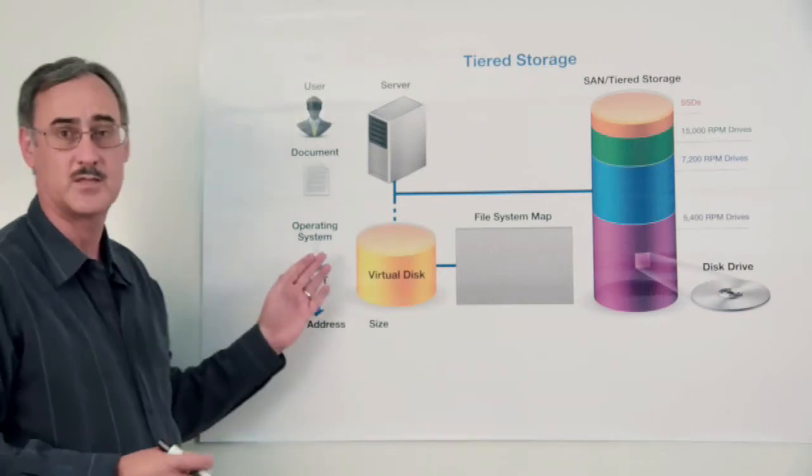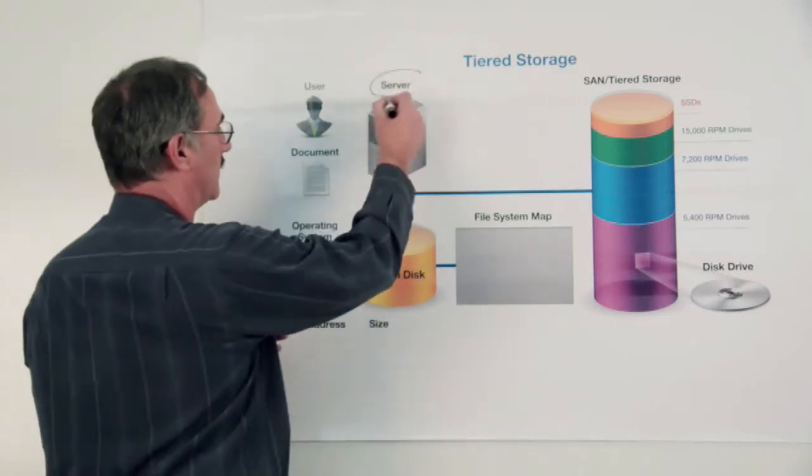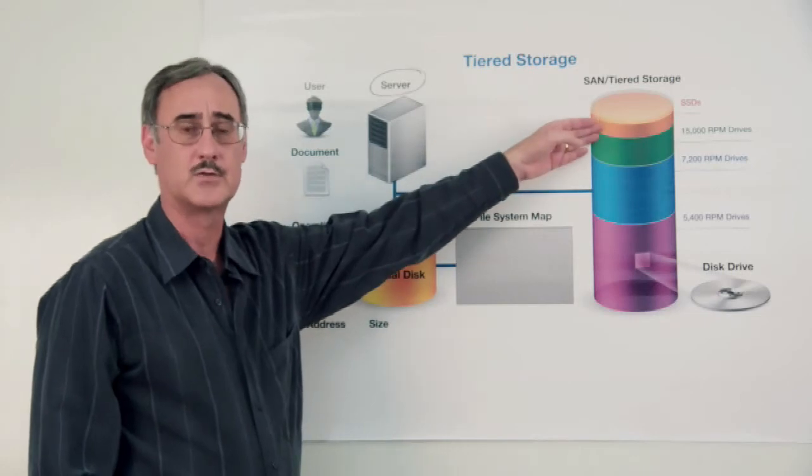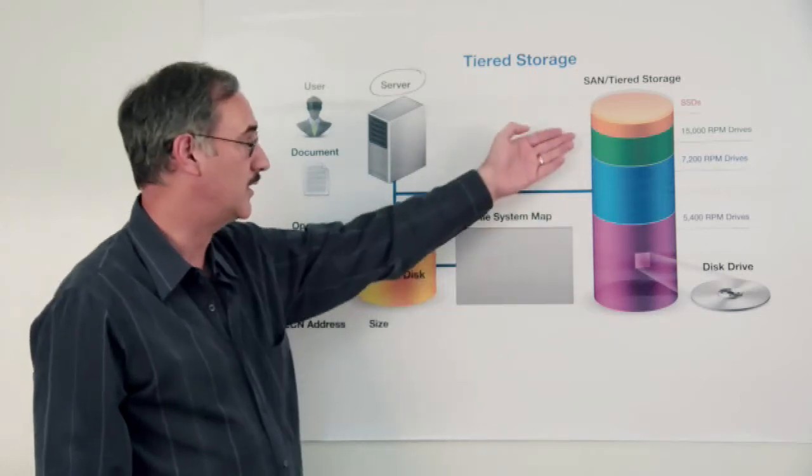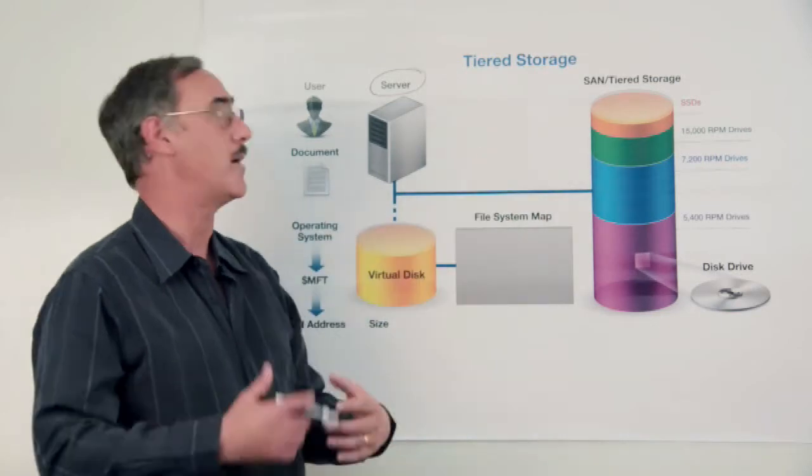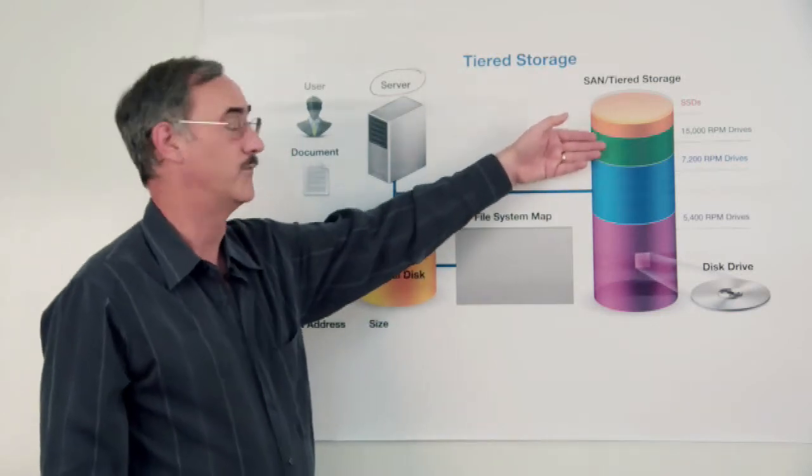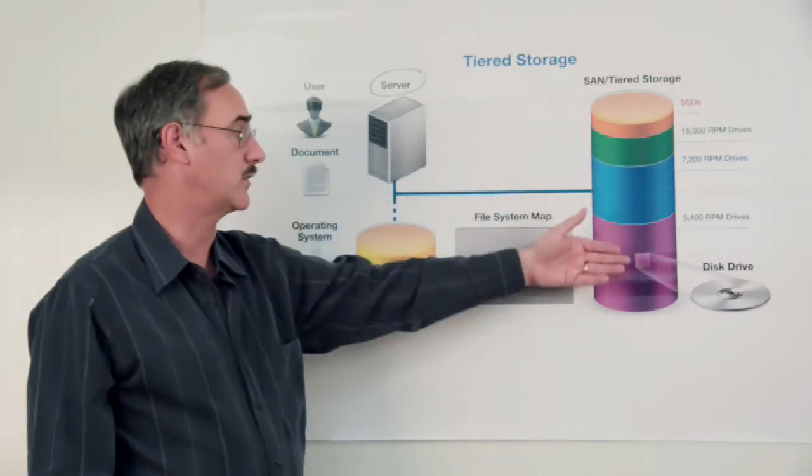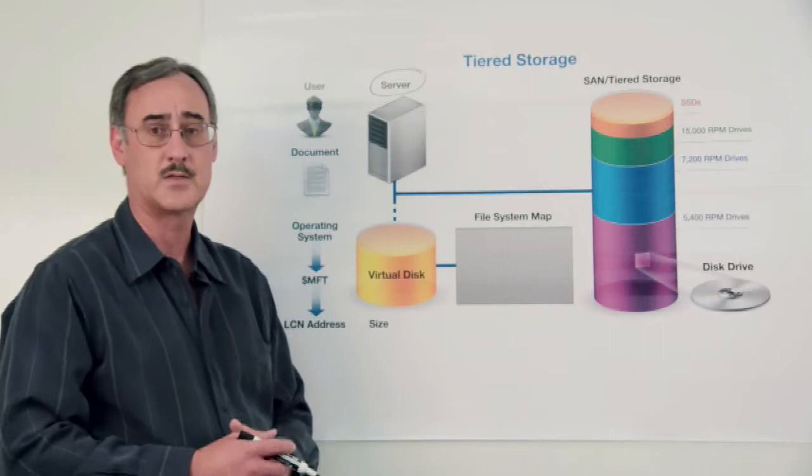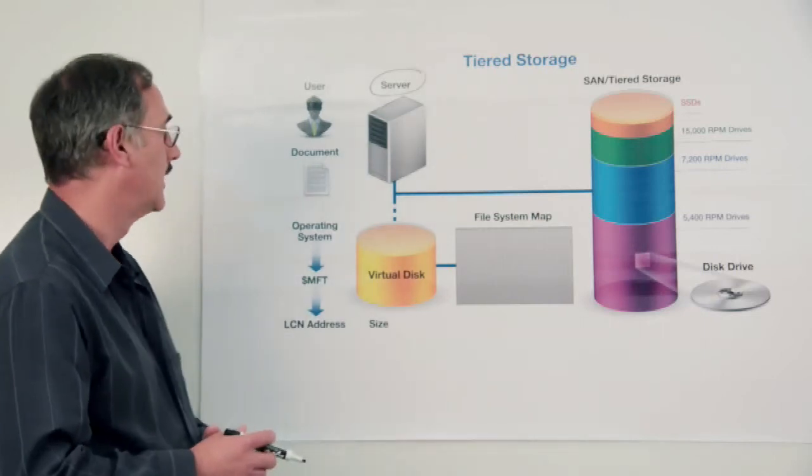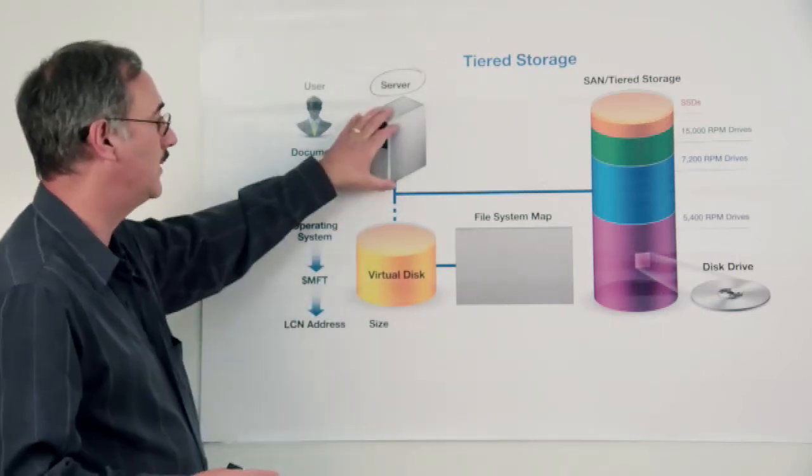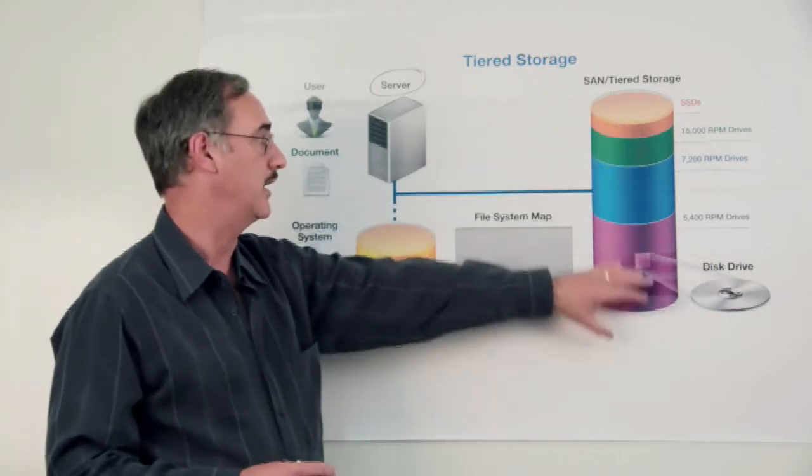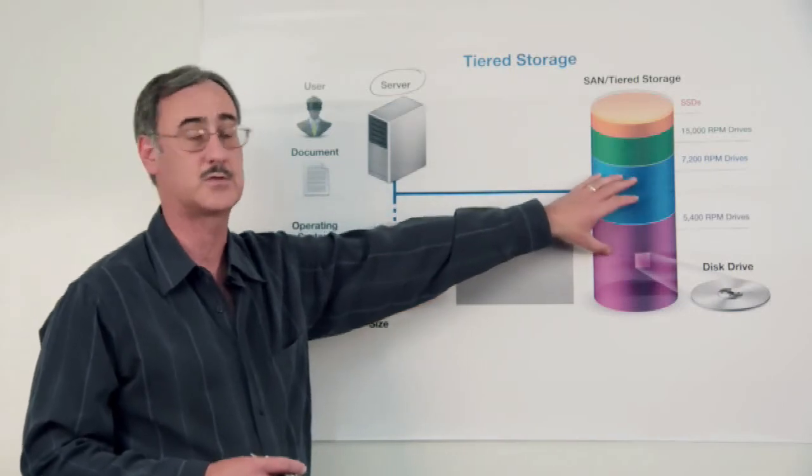But first of all, I think it's important to understand that when you have a Windows computer system, it doesn't really talk to or know anything about the direct storage in a SAN environment. Certainly you can have a combination of solid state drives, 15,000 RPM drives, medium speed 7200 RPM drives, or even some slower, less expensive storage 5400 RPM drives. But the point is that Windows doesn't really map or understand the physical technology and infrastructure at a physical SAN storage level.